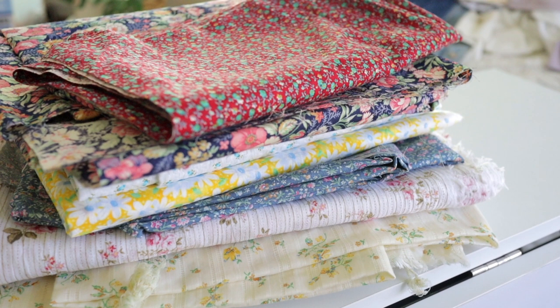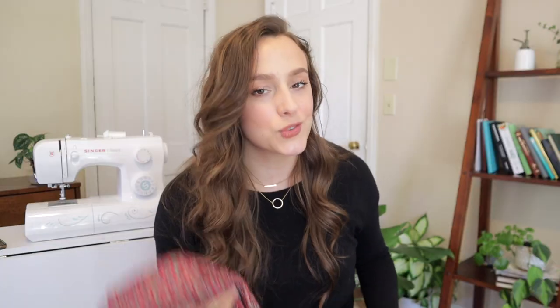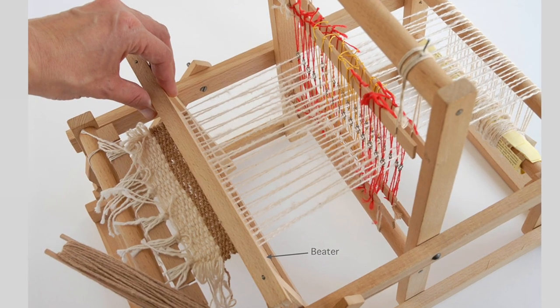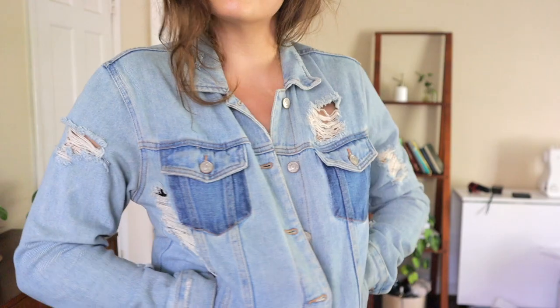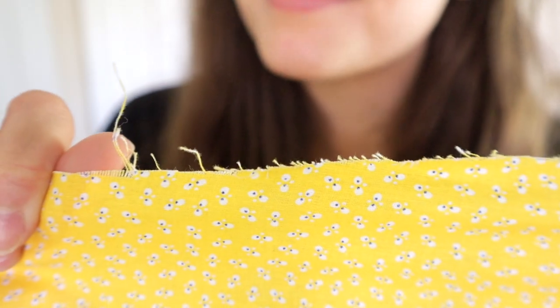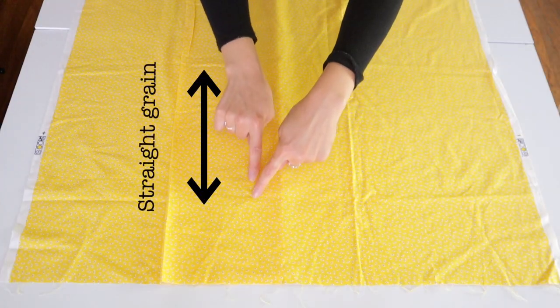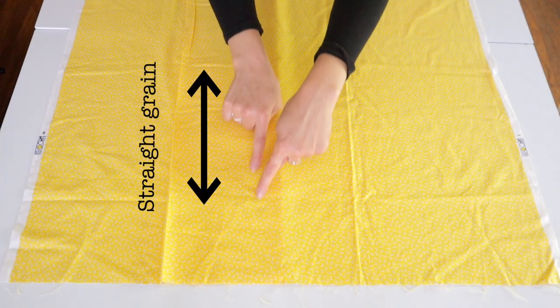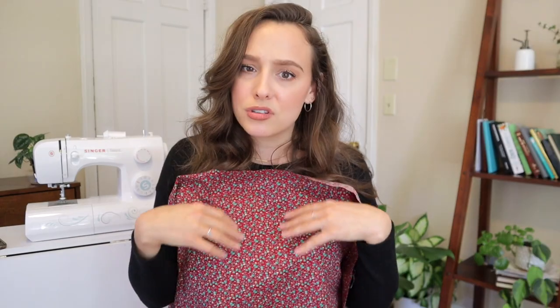Construction refers to how those fibers are turned into the fabric you'll be sewing with, and this includes wovens or knits. It's very important to know which one you're working with because it's a very different sewing experience. Starting with wovens: woven fabric is typically woven on a loom — it's tightly woven, it doesn't stretch much, and it frays. The lengthwise grain, or straight grain, runs lengthwise down the fabric and is called the warp.